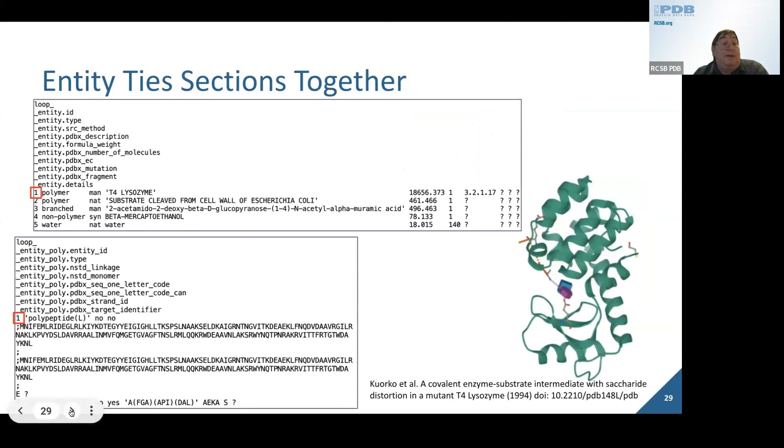To talk about the general purpose data file format, the thing that ties a lot of the categories together within the data files is the entity. The entity represents a specific macromolecule polymer chain. It could represent branch carbohydrates, individual ligands or non-polymers, or water molecules. In this particular example, polymer entity one has a sequence linked together with the same entity ID.